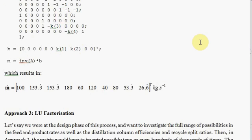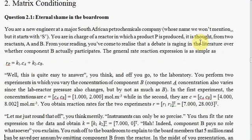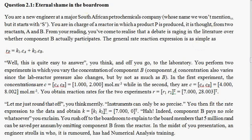To illustrate that, we're going to look at an example in the notes here: matrix conditioning. There's quite a long description given here. In this problem you're a new engineer at a petrochemicals company and you are in charge of a reactor in which you are producing product P from reactants A and B. This is the reaction rate mechanism that's understood to describe the rate at which P is produced from two reactions involving species A and B.